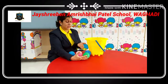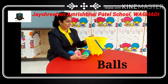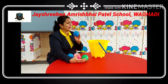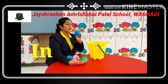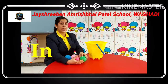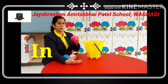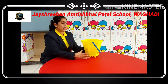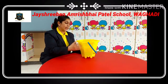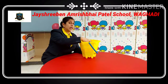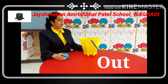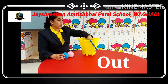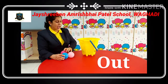Children, I am having some balls with me. And this is my bucket. Now I will put one by one ball in the bucket. In means under — in ka matlab under. So all my balls are in the bucket. Now I am taking out the balls. Out means bahar. I am taking out one by one ball out.